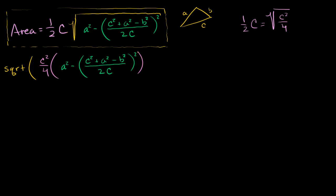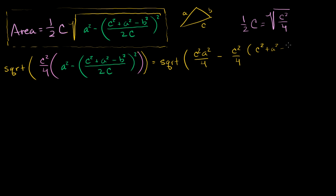So c squared over 4 times all of that, and then we close the square root. Now let me distribute the c squared over 4. This is going to be equal to the square root — this is going to be hairy, but I think you'll find it satisfying to see how this turns into something as simple as Heron's formula. The square root of c squared over 4 times a squared is c squared a squared over 4, minus c squared over 4 times c squared plus a squared minus b squared, squared over 4c squared. We immediately see that c squared and that c squared are going to cancel out.